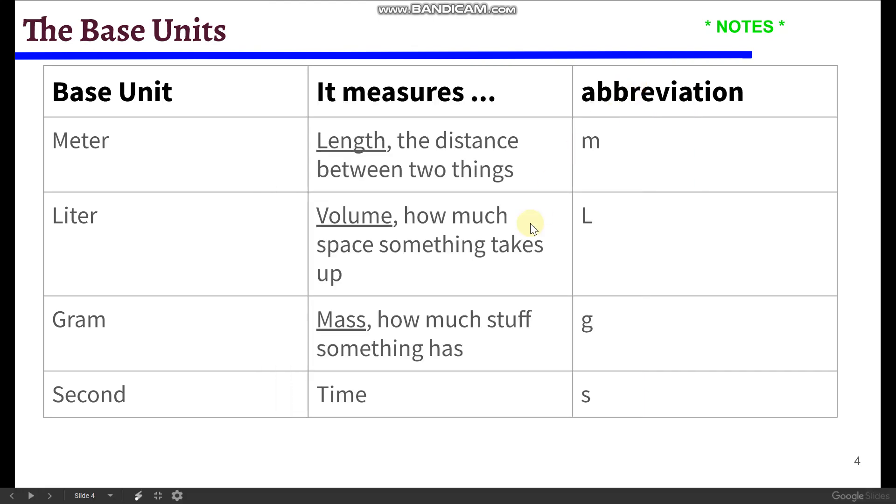Okay, what's going on folks? Mr. Brunsvold here. So first, we're going to go over the base units for the metric system. So what do I mean by base unit? Well, these are the units that we make all our other units from in the metric system. And so the first one is a meter. Meter is used to measure length, the distance between two things. It's abbreviated with a lowercase m.